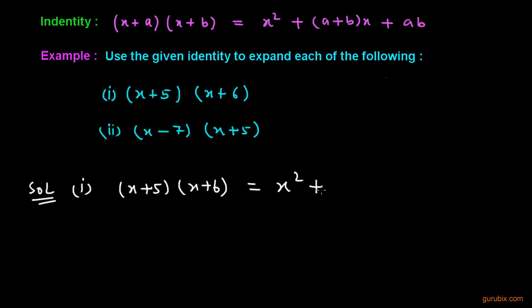plus (a + b). What is a? a is 5. What is b? b is 6. So we have x plus ab, this means 5 × 6. If we solve this value, it will be x² + 11x + 30.